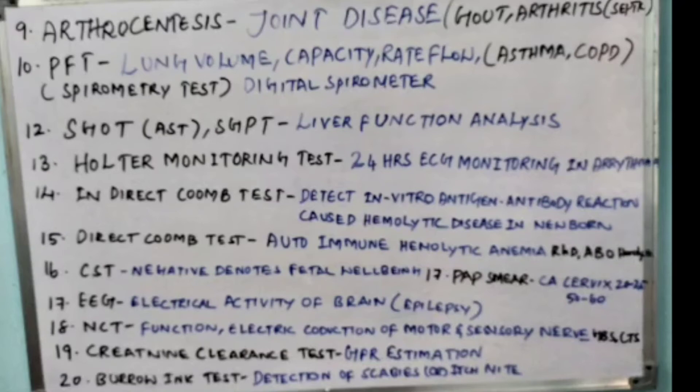Eighteenth point: NCT, which is Nerve Conduction Test, done to find out functions and electrical conduction of the motor and sensory nerves. An example condition is Guillain-Barré syndrome.